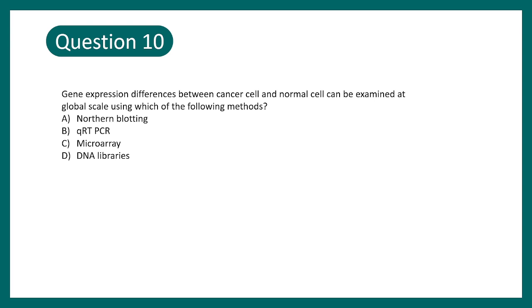Question number 10. Gene expression differences between cancer cell and normal cell can be examined at global scale using which of the following method? Northern blotting, quantitative real-time PCR, microarray, DNA library. The correct option is microarray because microarray would help to understand gene expression at global level. Many gene-related changes can be understood using one particular microarray analysis. Right?